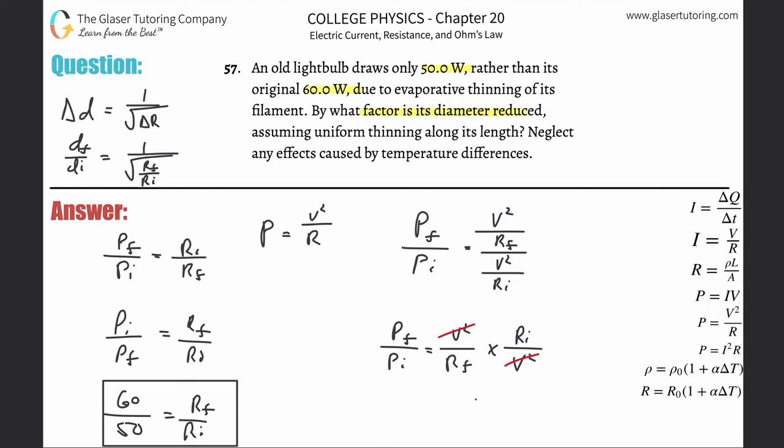Now notice, I just simply got to plug this result in because that's equal to RF over RI. And voila, 1 over square root of 60 over 50. So 1 divided by square root of 60 over 50. So we realize that the diameter now would have changed. DF over DI is going to be equal to 0.913. So 0.913, that's how much the diameter would have decreased to. It would have decreased to about 91% of its original value.